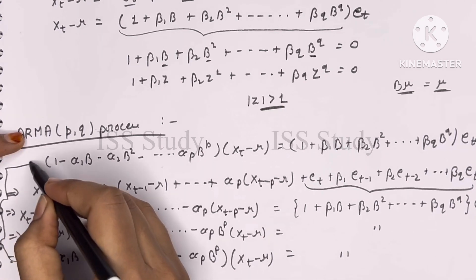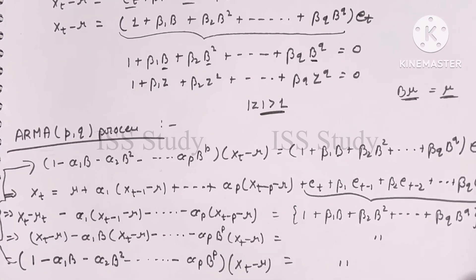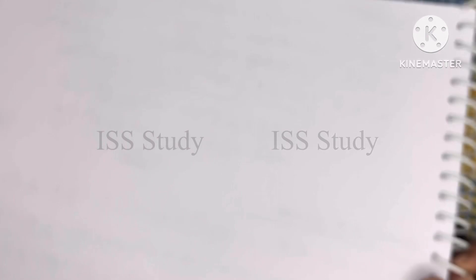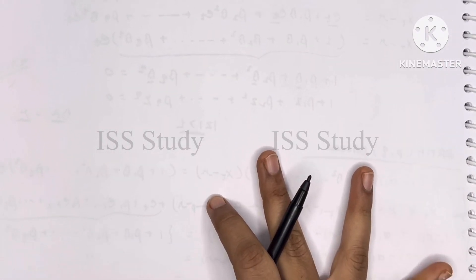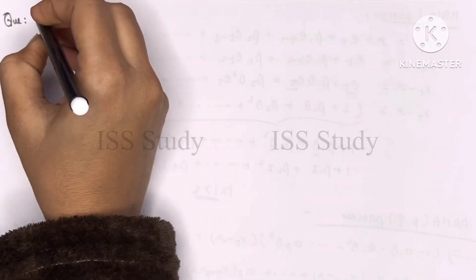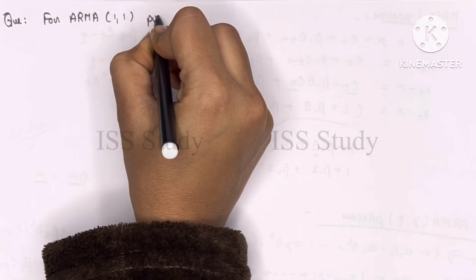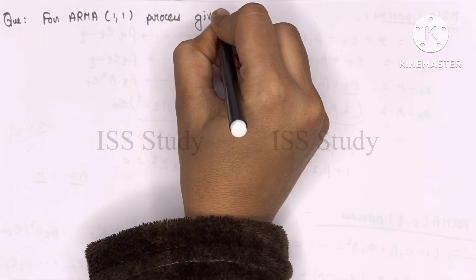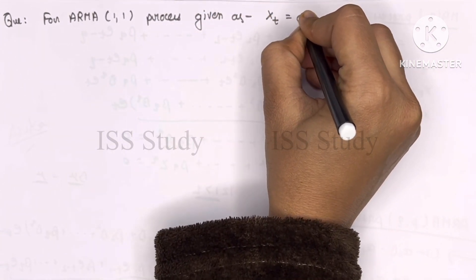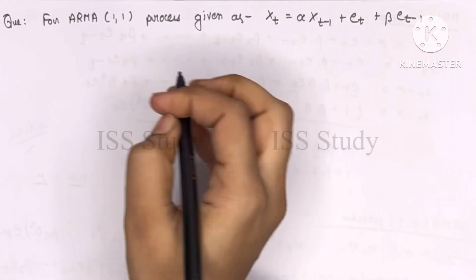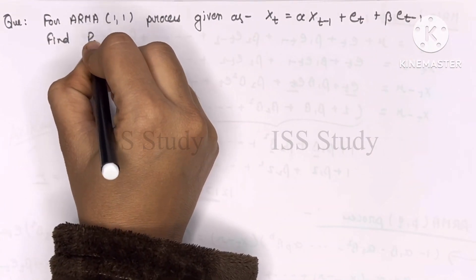We obtained this equation by following those steps. Now I'm going to discuss a question for the ARMA(1,1) process. The process is given as X_t equals alpha*X_{t-1} plus epsilon_t plus beta*epsilon_{t-1}, and you have to find the values of rho_1, rho_2, and rho_3.